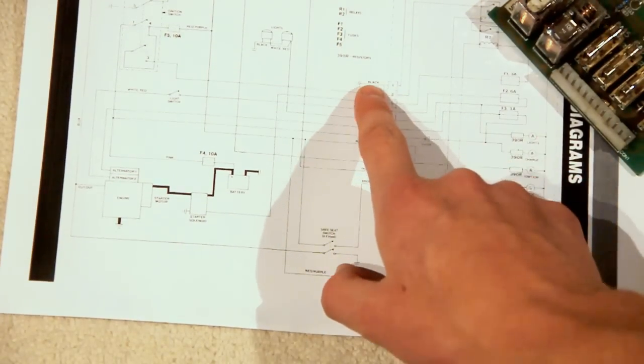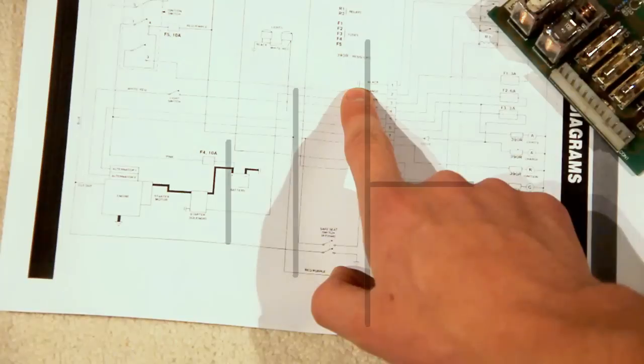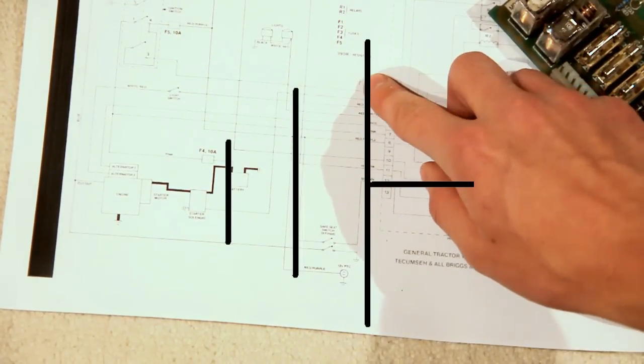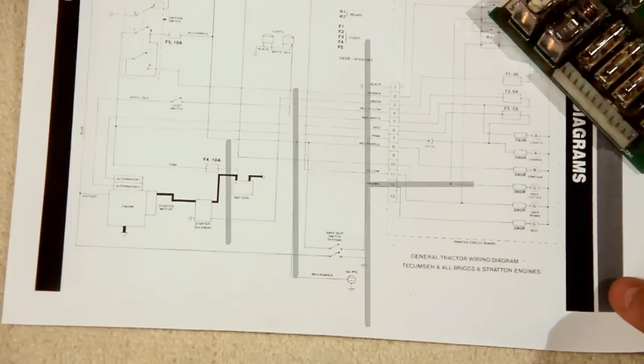Because if we follow this back, it says black, and that's the black wire, and the earth symbol is there. That is those three or four little lines in a triangle shape, and that is earth.